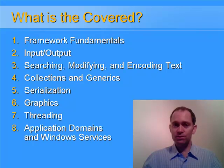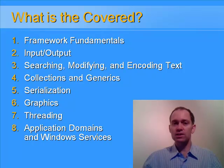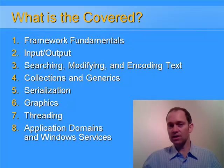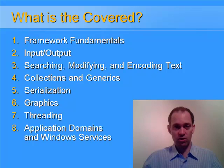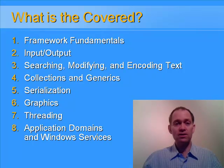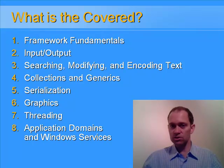There are 16 chapters in the course in total. The first one is very much an introductory chapter on framework fundamentals and includes things like object orientation, namespaces, inheritance, etc. The second chapter is on file input and output and streams. We then cover regular expressions by searching, modifying, and looking at encoding of text. Chapter 4 is collections and generics — a very important topic in any .NET application, including the new feature of generics introduced in .NET 2.